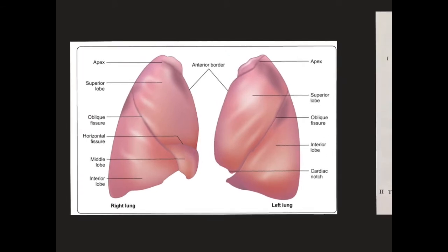Before going to the practical, we should revise some specific anatomy points. We have two lungs in our body — the right lung and the left lung. The right lung is divided into the superior lobe, middle lobe, and inferior lobe, whereas the left lung is divided into only the superior lobe and the inferior lobe. Here is the cardiac notch.